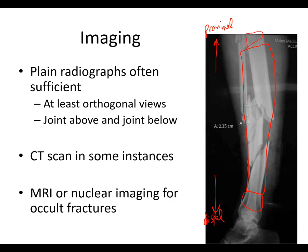The proximal metaphysis may be this portion here, and then you have the epiphysis — the portion with the articular surface, or the joint surface. So: diaphysis, metaphysis, and epiphysis. Keep those in mind; we're going to use a lot of that terminology. Sometimes we just call it the joint surface rather than the epiphysis or the distal end.